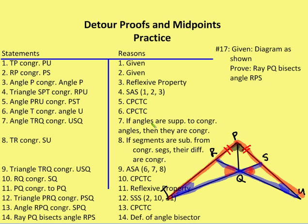So a lengthy detour proof — I needed to prove two separate pairs of triangles congruent before I could get to the conclusion that ray PQ bisects angle RPS.